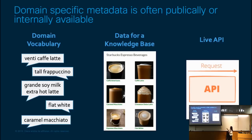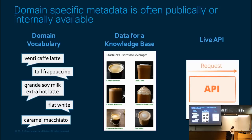In many use cases, you may need to query against a live API rather than a static knowledge base. Some examples of where you would need a live API include knowing what the weather is right now, knowing the current inventory for a specific product, or actually placing a request like an order at a restaurant. These again are either publicly available, available within your organization, or you could have a partnership with another organization to access their APIs.